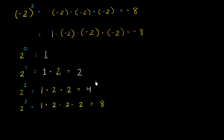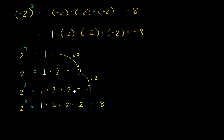You probably see a pattern here. Every time we raise 2 to a 1 higher power, we are multiplying by 2 again. To go from 2 to the 0 to 2 to the 1st, we multiply by 2. Then from 2 to the 1st to 2 to the 2nd, we multiply by 2 again. And from 2 to the 2nd to 2 to the 3rd, we multiply by 2 one more time.